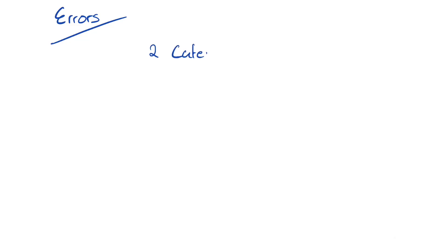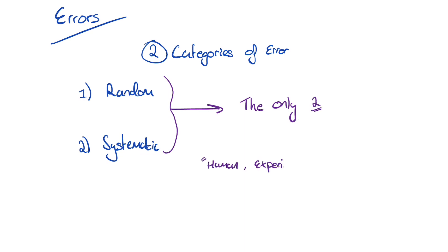Let's begin with errors. There are two categories of errors in practicals that we deal with in physics, random and systematic. When you're asked in the exam to state the type of error, there is only these two. Don't be tempted to write human or anything other than random or systematic.